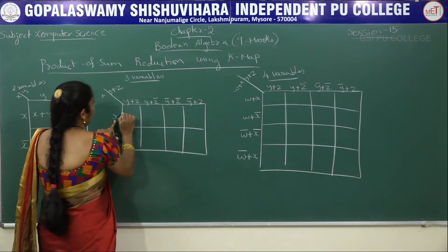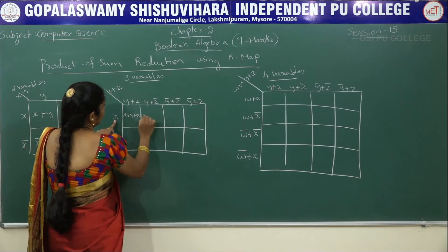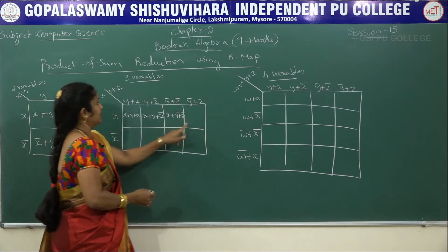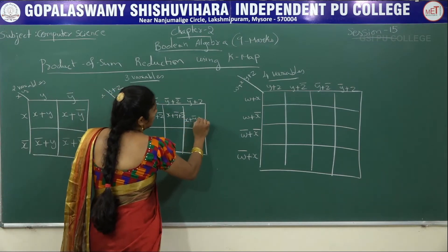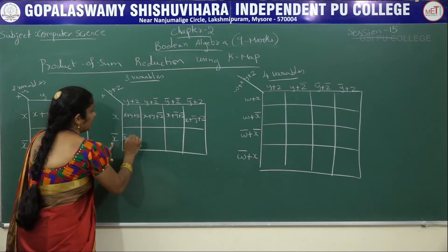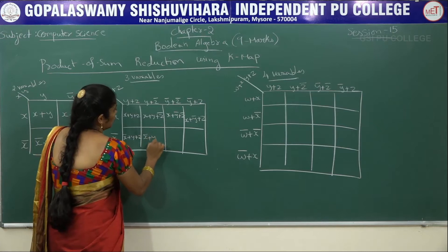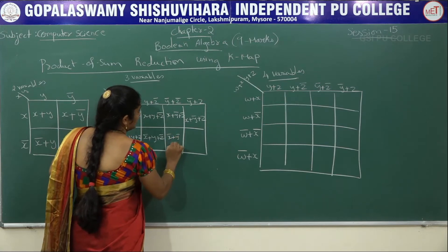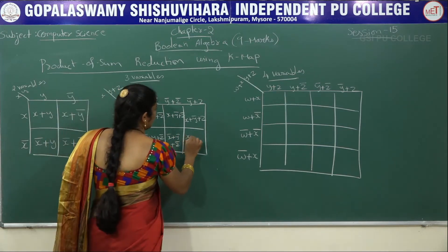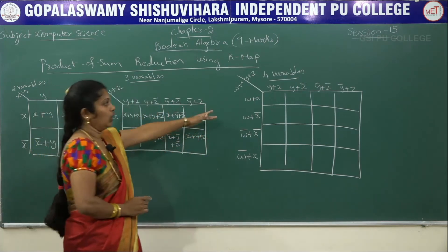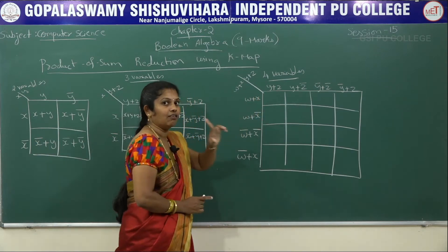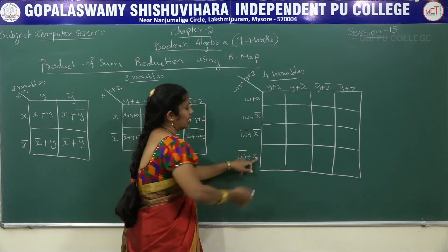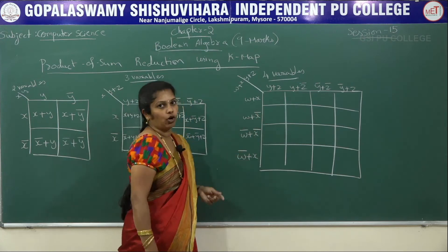For 3 variables, the cells represent: X plus Y plus Z, X plus Y plus Z bar, X plus Y bar plus Z bar, X plus Y bar plus Z, X bar plus Y plus Z, X bar plus Y plus Z bar, X bar plus Y bar plus Z bar, and X bar plus Y bar plus Z. For maxterm with 3 variables, the first three entries are non-complement, then for the remaining ones we put a bar, and for the last one no bar.